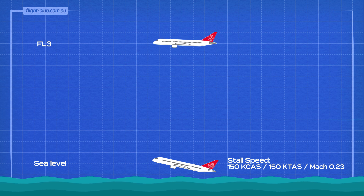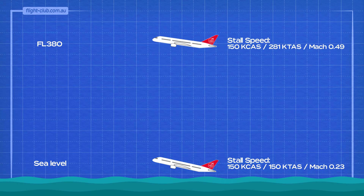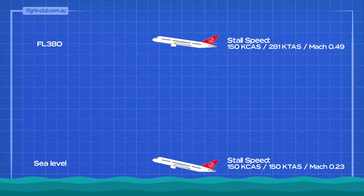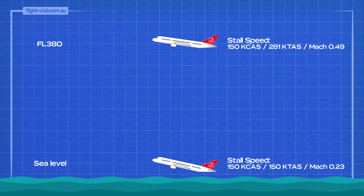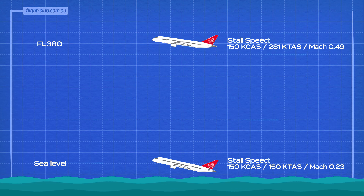At flight level 380, the aeroplane stalls at the same calibrated airspeed, but at a much higher true airspeed of 281 knots and a Mach number of 0.49. The dynamic pressure the aeroplane experiences at flight level 380 is the same as at sea level, but at flight level 380 the Mach number is higher.